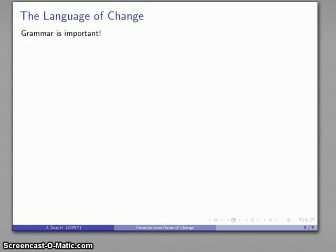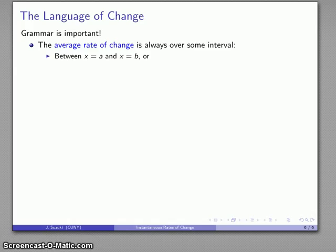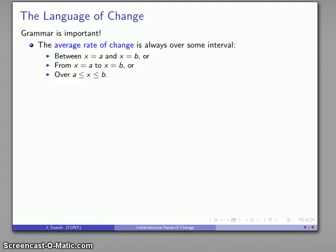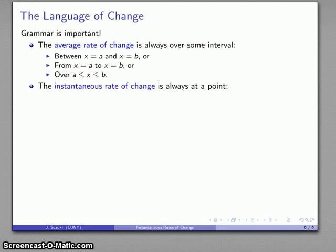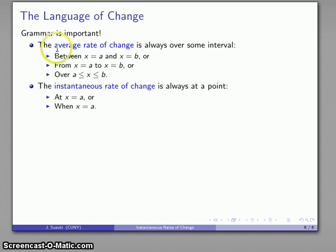Grammar is important when talking about the language of change. The average rate of change is always defined over some interval. We might say the average rate of change between x equals A and x equals B, or from x equals A to x equals B, or over the interval a less than or equal to x less than or equal to b. The instantaneous rate of change, on the other hand, is always measured at a point — we say the instantaneous rate of change at x equals A, or when x equals A.